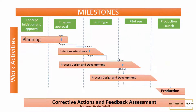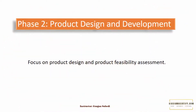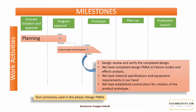Phase 2: Product Design and Development. The outputs of phase 1 are the inputs of phase 2. However, phase 2 does not strictly start after phase 1 is completed — as some aspects of the planning phase are completed, we are ready to move to product design and development. Phase 2 has principal focus on product design and product feasibility assessment. After phase 2 is complete, we have design review and verification of the completed design, a completed design FMEA (failure modes and effects analysis), material specifications and equipment requirements, and established controls for creation of the product prototype. The quality tool used in phase 2 is design FMEA.